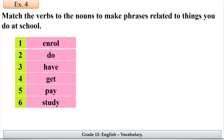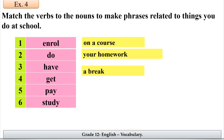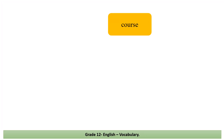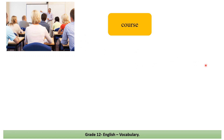Now go to your student's book, open page 116. Exercise four: match the verbs to the nouns to make phrases related to things you do at school. Look at the book, take your time, stop the video and try to match. Now check your answers: enroll on a course, do your homework, have a break, get low marks or high marks, pay attention to the teacher, study math, music, or history.